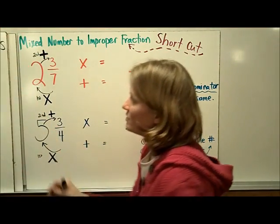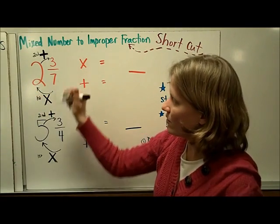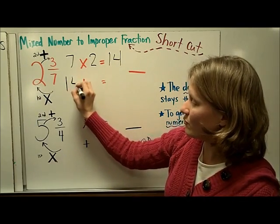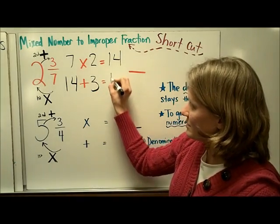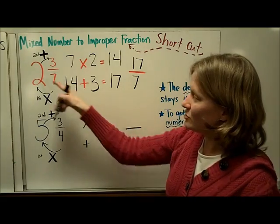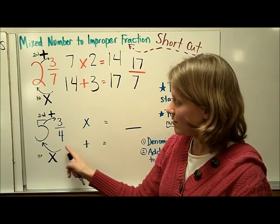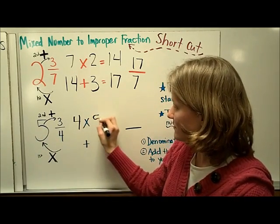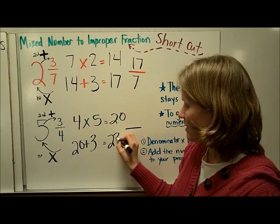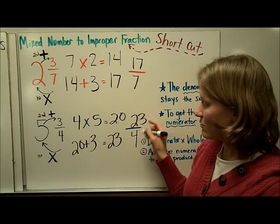Here is another shortcut to turn mixed numbers into improper fractions. First, multiply the denominator by the whole number: 7 times 2 gives 14. The second step is to add the numerator to the product you already got: 14 plus 3 equals 17. This number becomes your numerator and your denominator stays the same as what you started with. So 2 and 3 sevenths written as an improper fraction is 17 sevenths. Let's do the same steps: multiply the denominator by the whole number — 4 times 5 is 20 — then add the numerator, 3, to get 23. So this fraction can be written as 23 fourths.